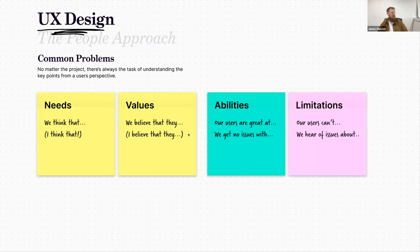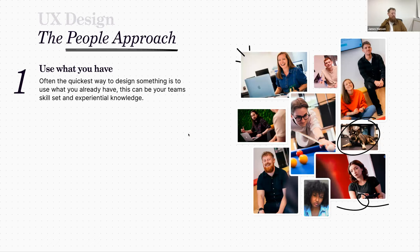Common problems: no matter what the project, there's always the task of understanding the key points from a user's perspective - their needs, values, abilities, and limitations. The common problems before UX became so well respected as an approach would be taking your own opinions - not just personally, but the royal 'we' within a team - what we believe the needs to be, what we think the values are, what we believe the abilities and limitations are of either the user or the project itself.